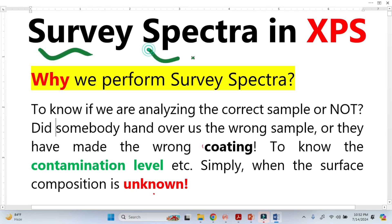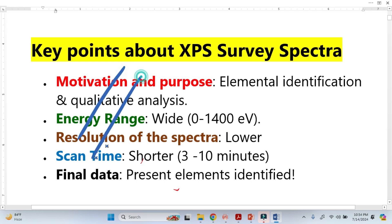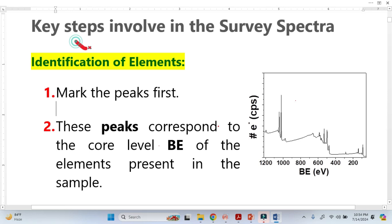What is survey spectra in XPS and why we perform survey spectra? The main purpose of a survey spectra is to identify the type of elements that exist in the sample. The survey spectra can also be called different names. Finally, we will talk about the key steps involved in a survey spectra.